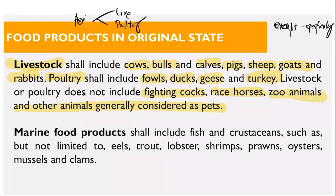Marine food products include fish and crustaceans, including but not limited to eels, trout, lobster, shrimps, prawns, oysters, mussels, and clams. Any fish and crustaceans are exempt as marine food products. To summarize: livestock and poultry — which are agricultural food products in their original state — are exempt. These include cows, bulls, pigs, fowls, ducks, geese, and turkey. Marine food products in their original state include fish and crustaceans.